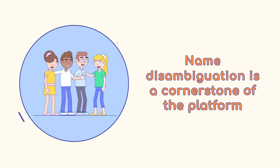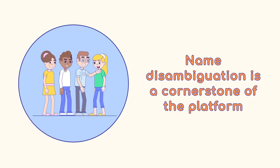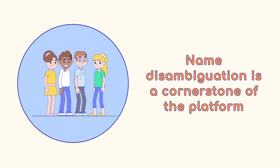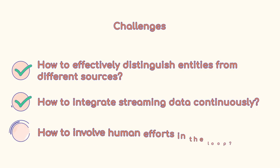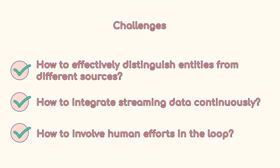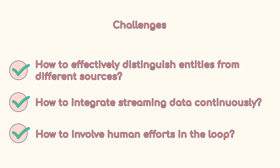AMiner can be viewed as an author-centric search system where name disambiguation is one of the most important modules in the data integration process. To build an effective and efficient name disambiguation system, there are several challenges we need to face.